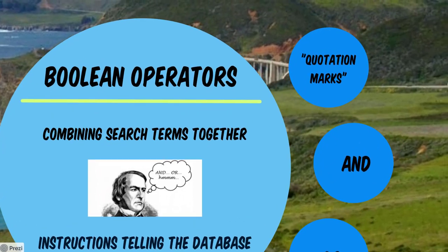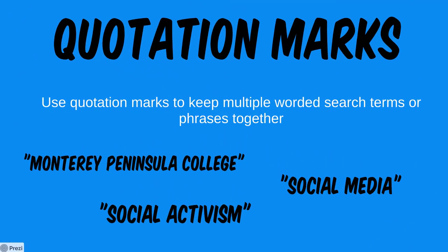The first Boolean operator is quotation marks. If you have a multiple-word subject or a specific multi-word term, put quotation marks around it. For example, if I'm researching Monterey Peninsula College, I put quotation marks around it so all results contain exactly that phrase together. Without quotation marks, it also searches for those words separately — you might get a result with 'Monterey' in paragraph one, 'Peninsula' in paragraph two, and 'college' in paragraph five, which has nothing to do with Monterey Peninsula College. For my topic, I put quotation marks around 'social media' and 'social activism' to keep those words together.